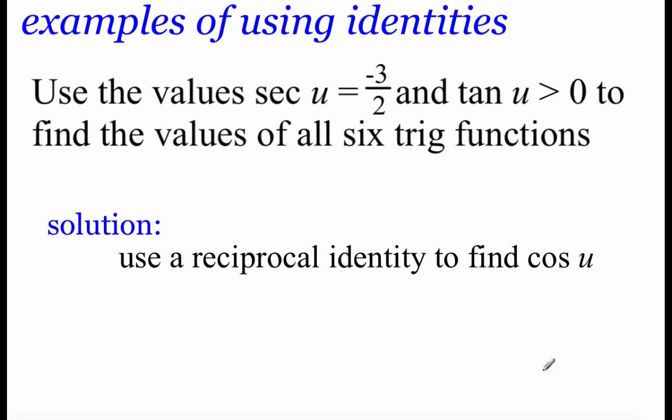So in this first example, here's what we've got. We know that the secant of our angle u is negative 3 halves, and we're told that our tangent of u is going to be a positive value. What we're going to do is go through and find the values for all six of our other trig functions.